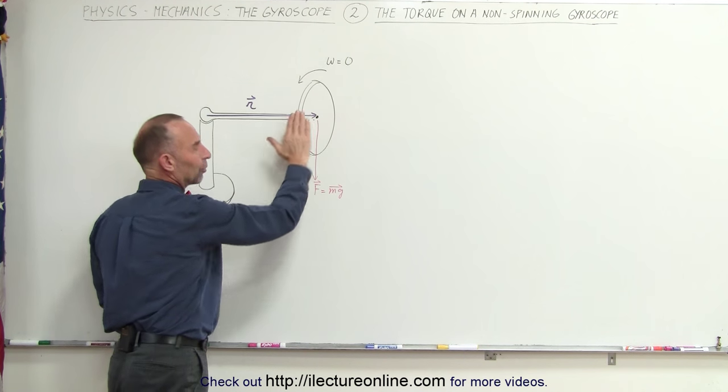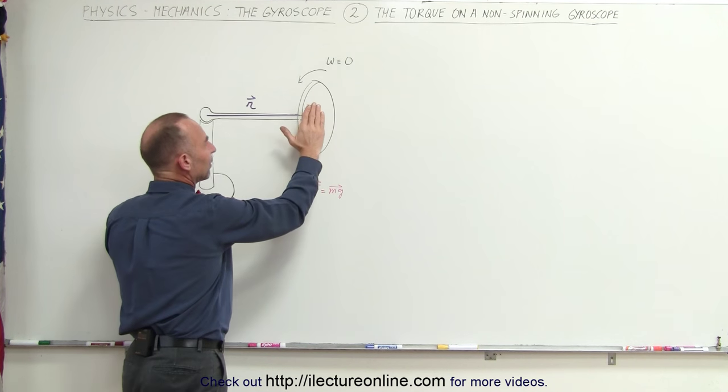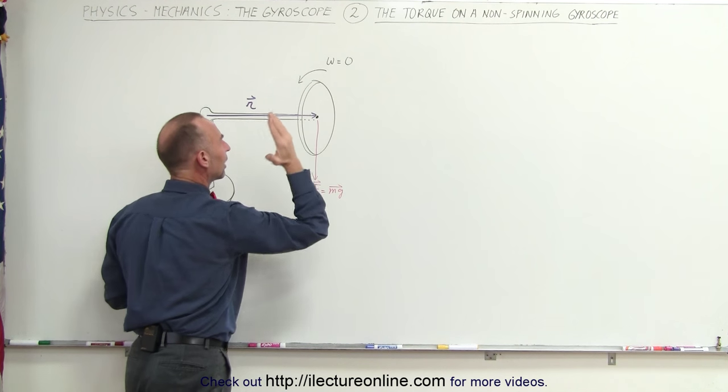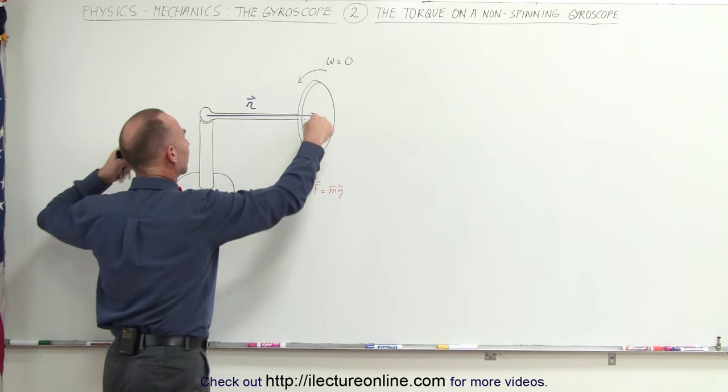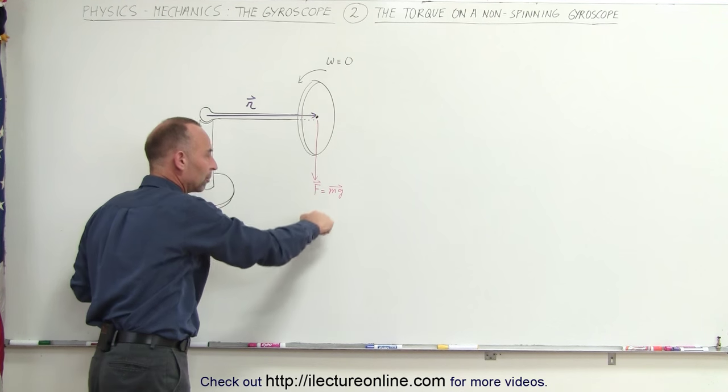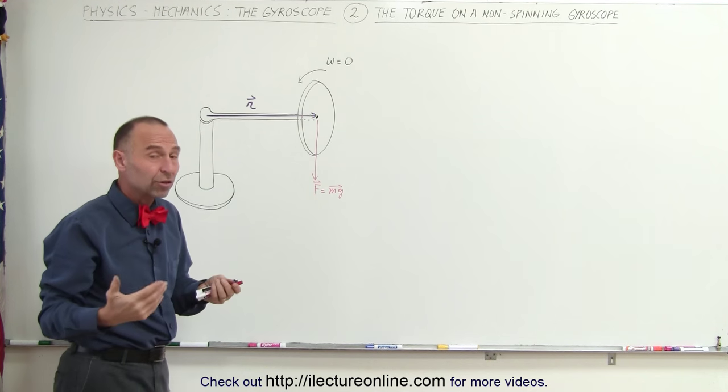Assuming that this is drawn at an angle, assume it to be like this so that the torque would be acting into the board. But instead of the gyroscope turning in this direction because of the torque, the gyroscope is going to turn in this direction. So what would you expect?